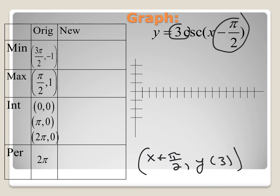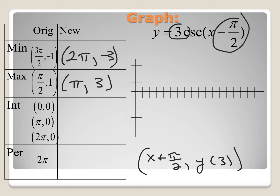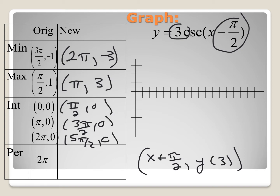For our minimum, the original point was 3 pi over 2 and negative 1. After translating with our formula, we get 2 pi and negative 3. For our maximum, it ends up at pi and positive 3. For our intercepts, we have pi over 2, 3 pi over 2, and 5 pi over 2, all with a y value of 0. The period stays as 2 pi for the sine function.